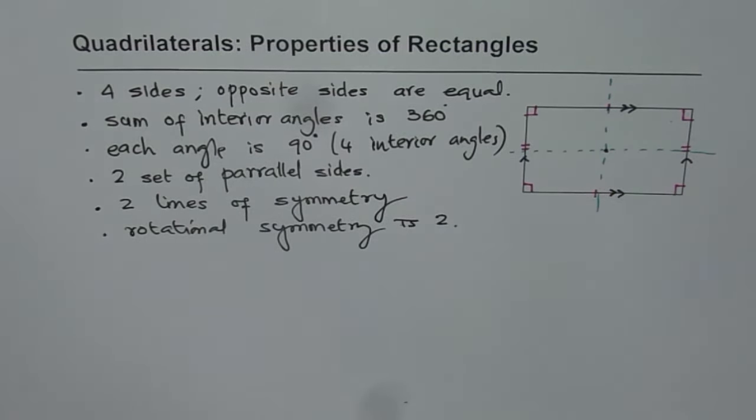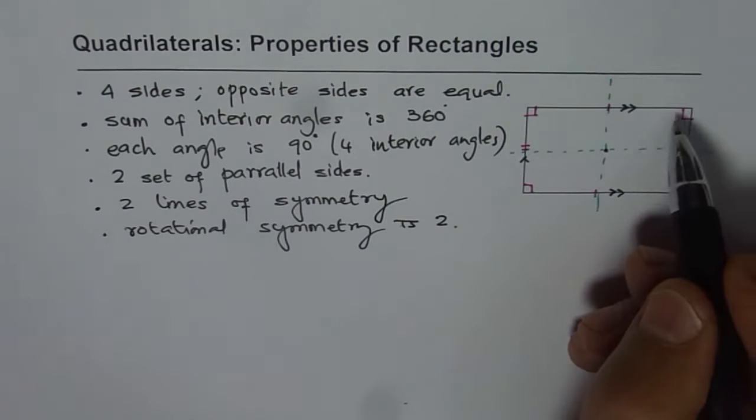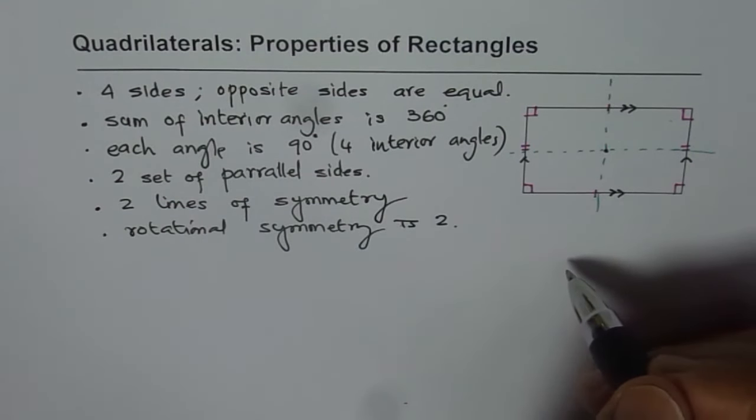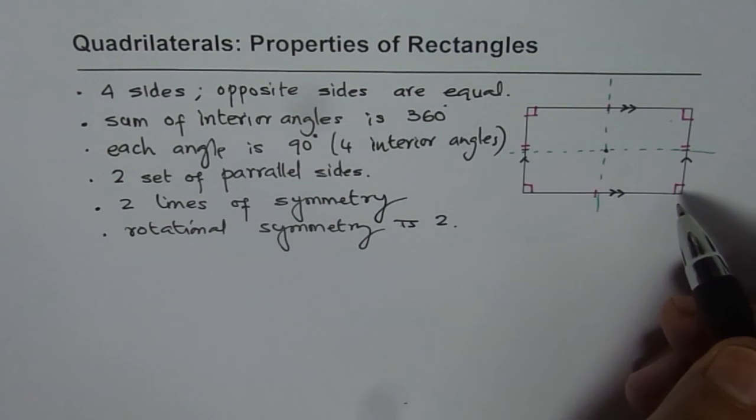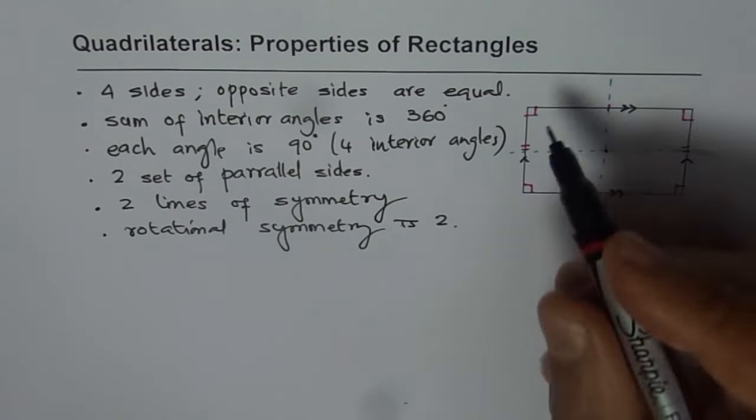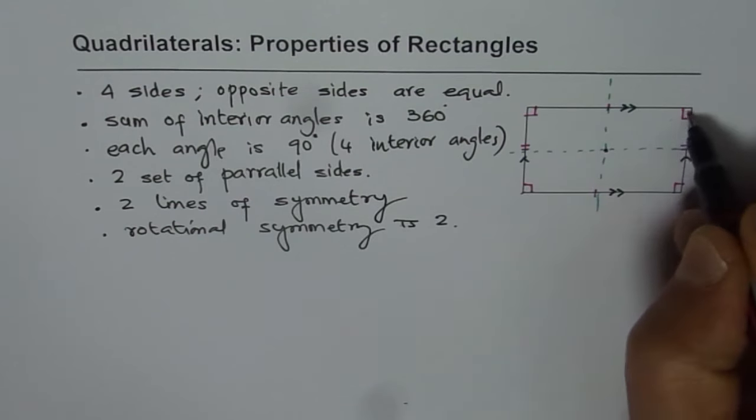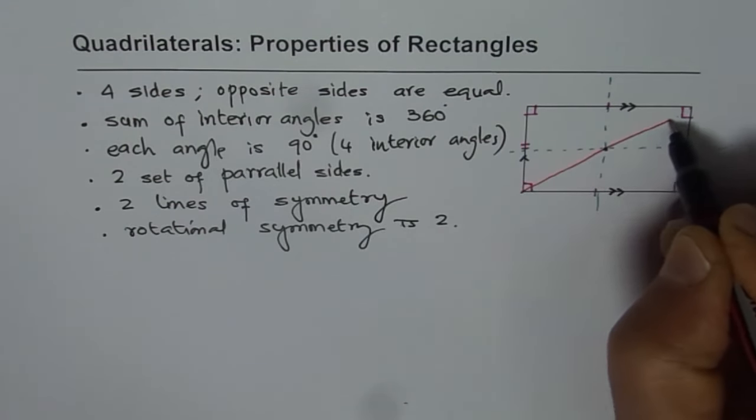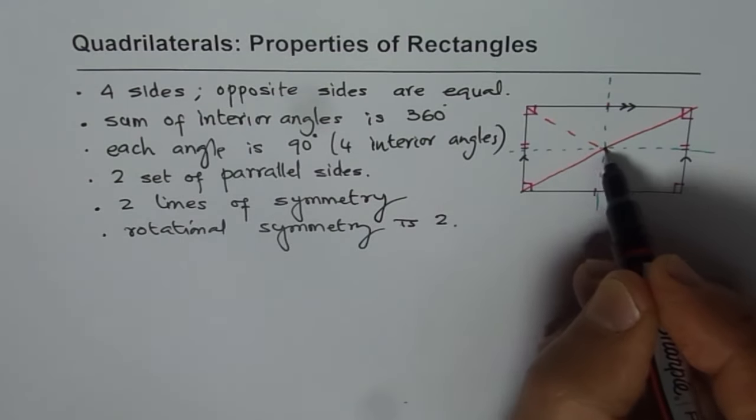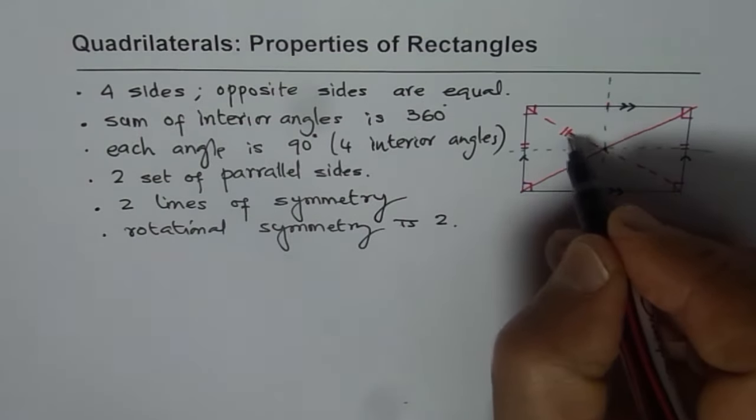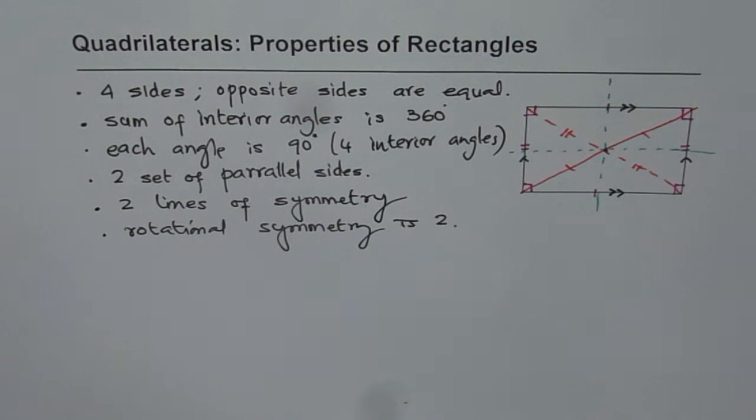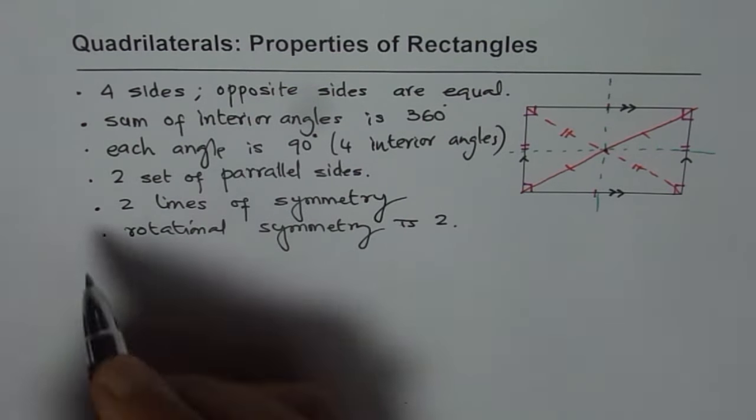Now, how about the diagonals? Do they intersect at 90 degrees? No, they don't. But do they bisect each other? That is to say, if I draw a diagonal connecting the opposite ends, like this, and if I connect this end, then are these equal? Yes, they are. So diagonals bisect.